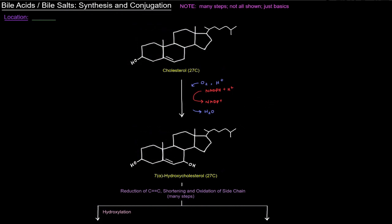In this video we're going to talk about bile acid synthesis and their conjugation to bile salts. As a quick note, there are many steps and not all of them are shown — we're just talking about the basics, a little overview of what's going on. First question: where does this all happen? As far as organs, this all happens in the liver. As far as organelles go, some reactions occur in the ER, some in the mitochondria, some in the peroxisome, and some in the cytosol.